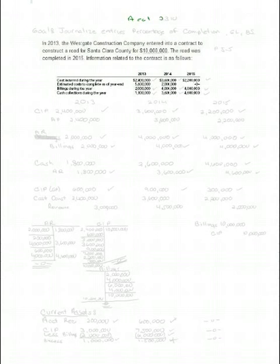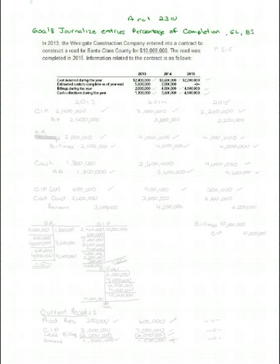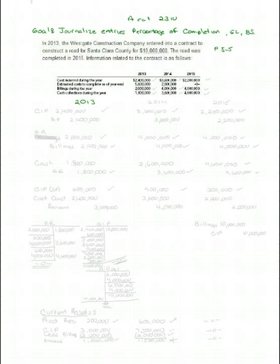Hello and welcome to my Accounting 2310 Pencast. My goal for this Pencast is to journalize entries for percentage of completion, post and look at the accounts in the general ledger and the financial statements on the balance sheet. We did the income statement on our last Pencast. I am going to be using problem 5.5 from the Spice on Intermediate Accounting textbook — I've reproduced that problem on the paper for you. I'll do 2013 first, then post to the general ledger and balance sheet for 2013, and then do the same for 2014 and 2015. Let's get started.